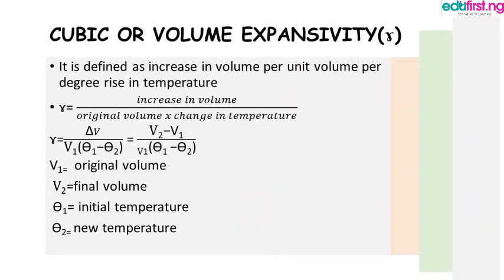Now we move to cubic or volume expansivity, represented with gamma. It is defined as the increase in volume per unit volume per degree rise in temperature. The formula is: gamma equals change in volume all over V1 multiplied by (theta2 minus theta1), which equals (V2 minus V1) all over V1 times (theta2 minus theta1), where V1 is original volume, V2 is final volume, theta1 is initial temperature, and theta2 is new temperature.